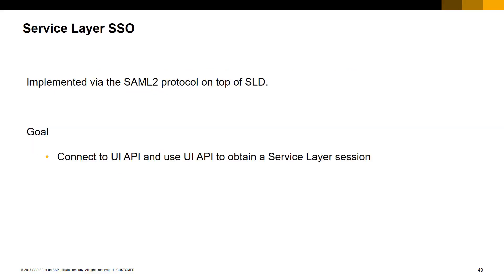Service Layer Single Sign-On is implemented via the SAML 2 protocol on top of SLD. With this feature, the UI API can provide a Service Layer connection sharing the same connection details the UI API is connected with. The goal is to be able to open a web page inside a UI API add-on without requiring the end user to enter any credentials, as they are already connected with UI API to SAP Business One.